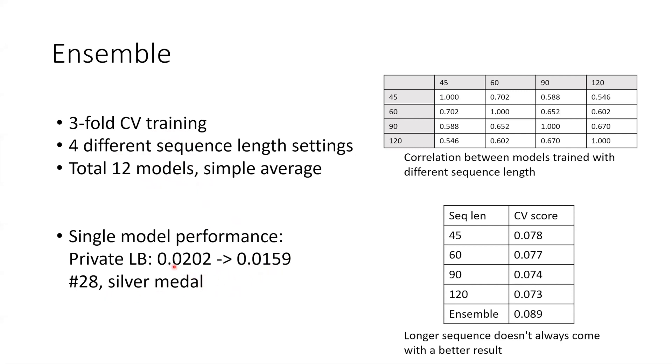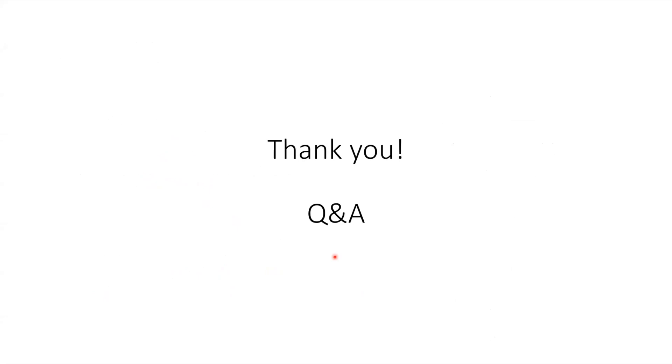A single model can get 0.0159 in the private leaderboard which is around 28th place, while the ensemble model can get 0.0202 which is seventh place. That's all of my presentation. Thanks everyone and feel free to ask me any questions.